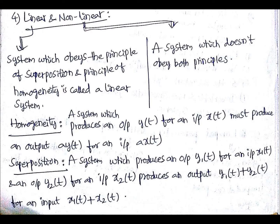Homogeneity is said to be obeyed by a system if it produces an output y(t) for an input x(t), then it must produce an output a·y(t) for an input a·x(t). That means a scalar multiplied with the input signal should give the same scalar multiplied with the output — then you can say that the system is obeying the homogeneity principle.